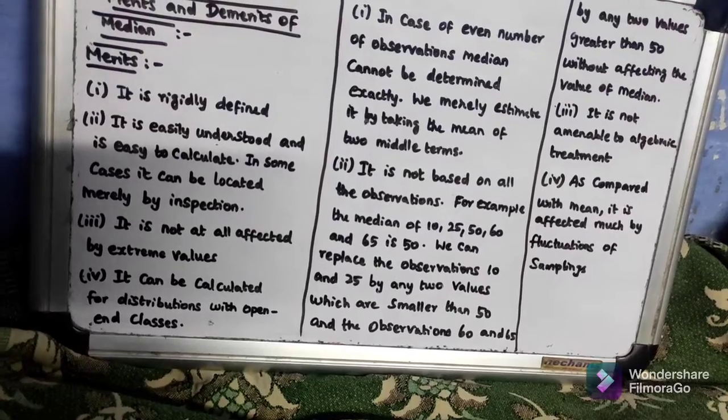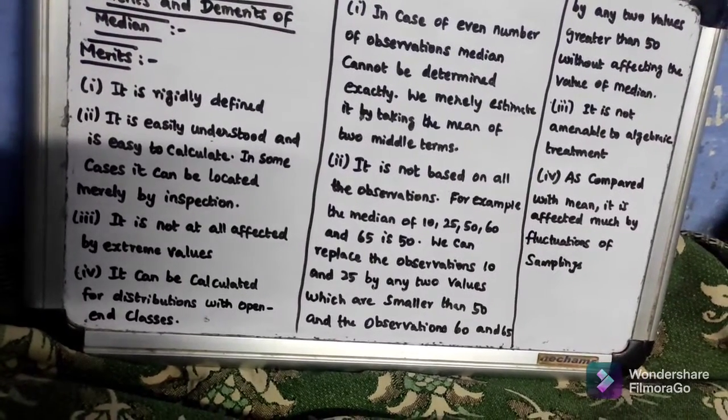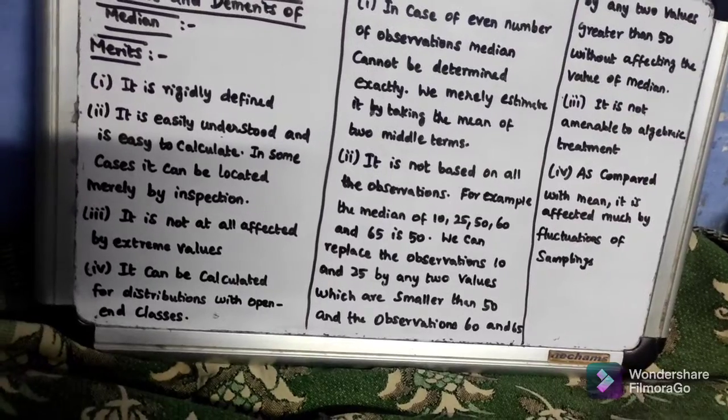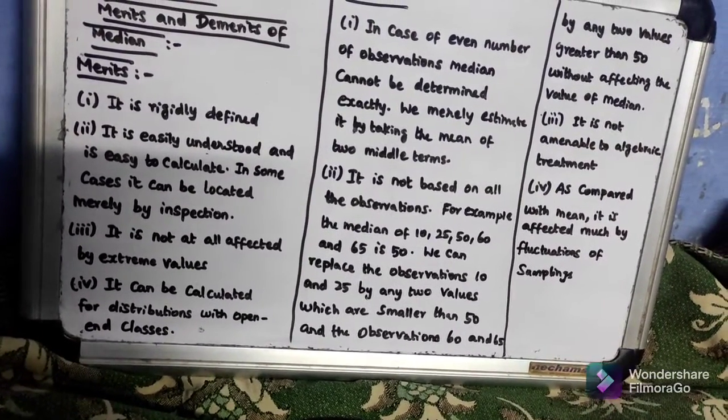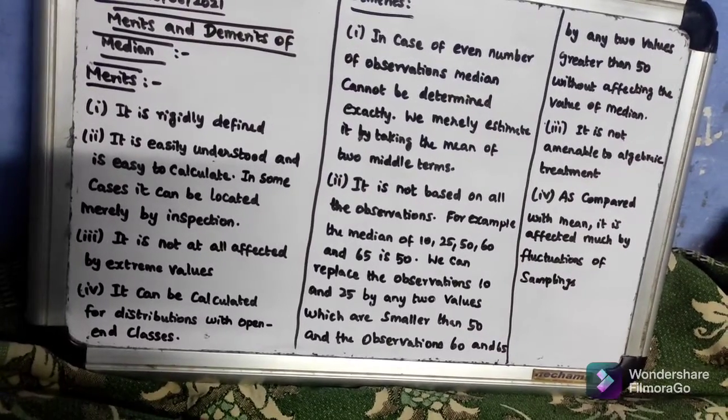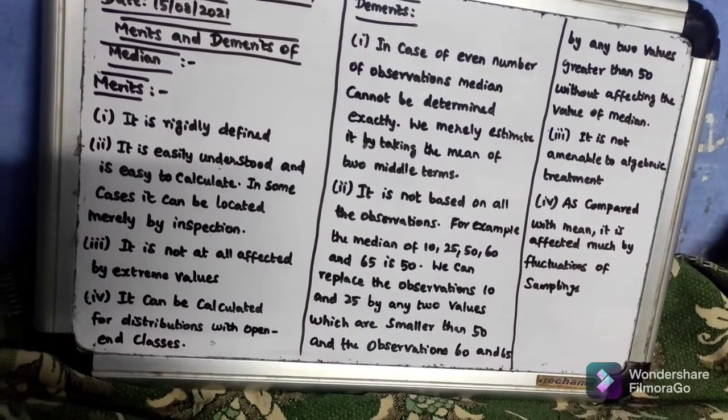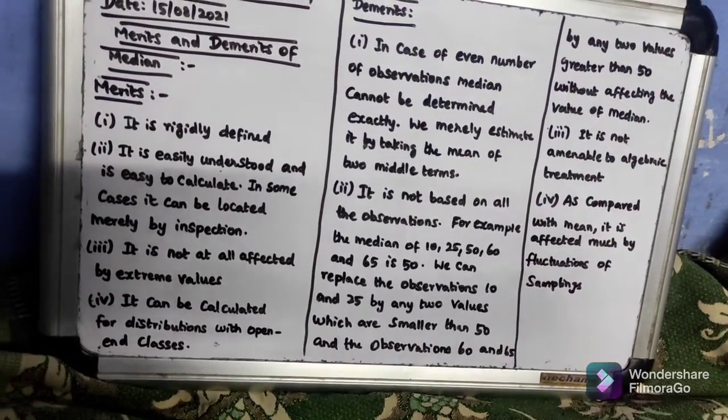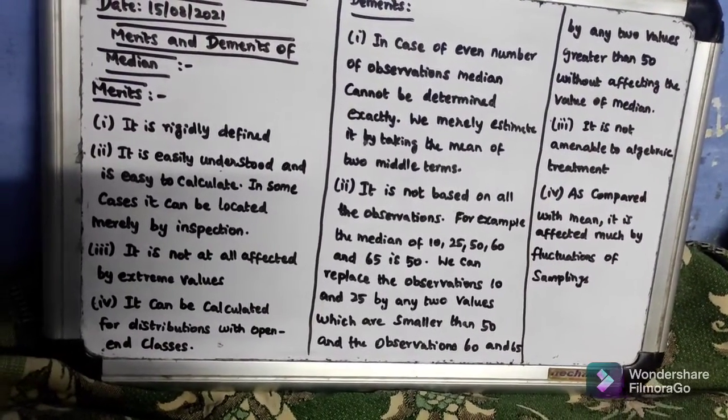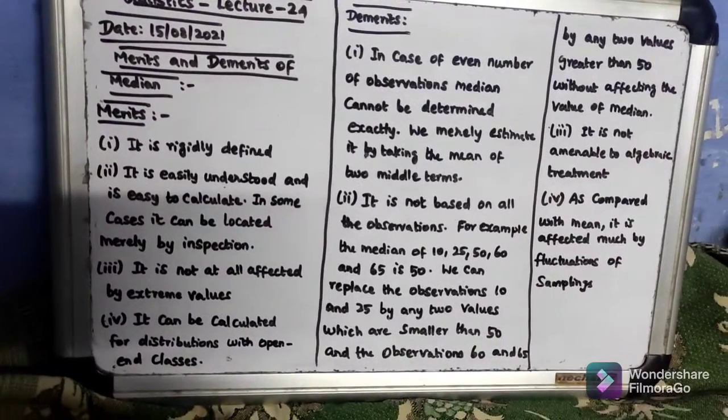We can replace the observations of 10 and 25 with any values smaller than 50, and also replace 60 and 65 by any two values larger than 50 without affecting the median.